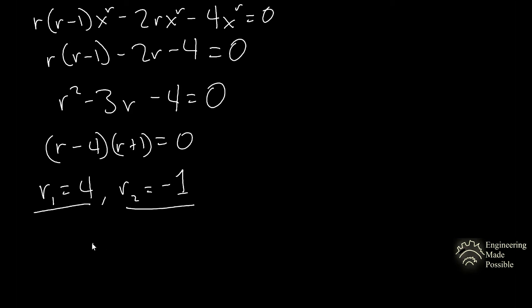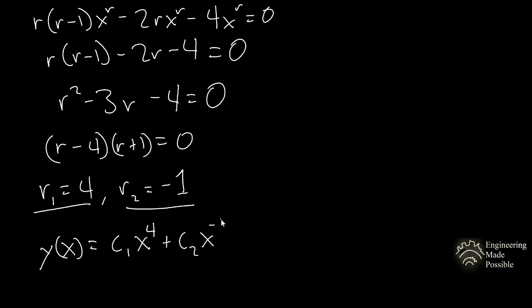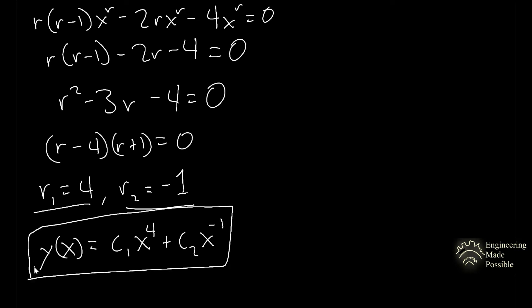So r₁ equals 4 and r₂ equals negative one — these are the distinct roots. For the Cauchy-Euler equation with distinct roots, the general solution is y(x) equals c₁ times x to the fourth plus c₂ times x to the negative one, expressed in terms of x to the r power for each root.